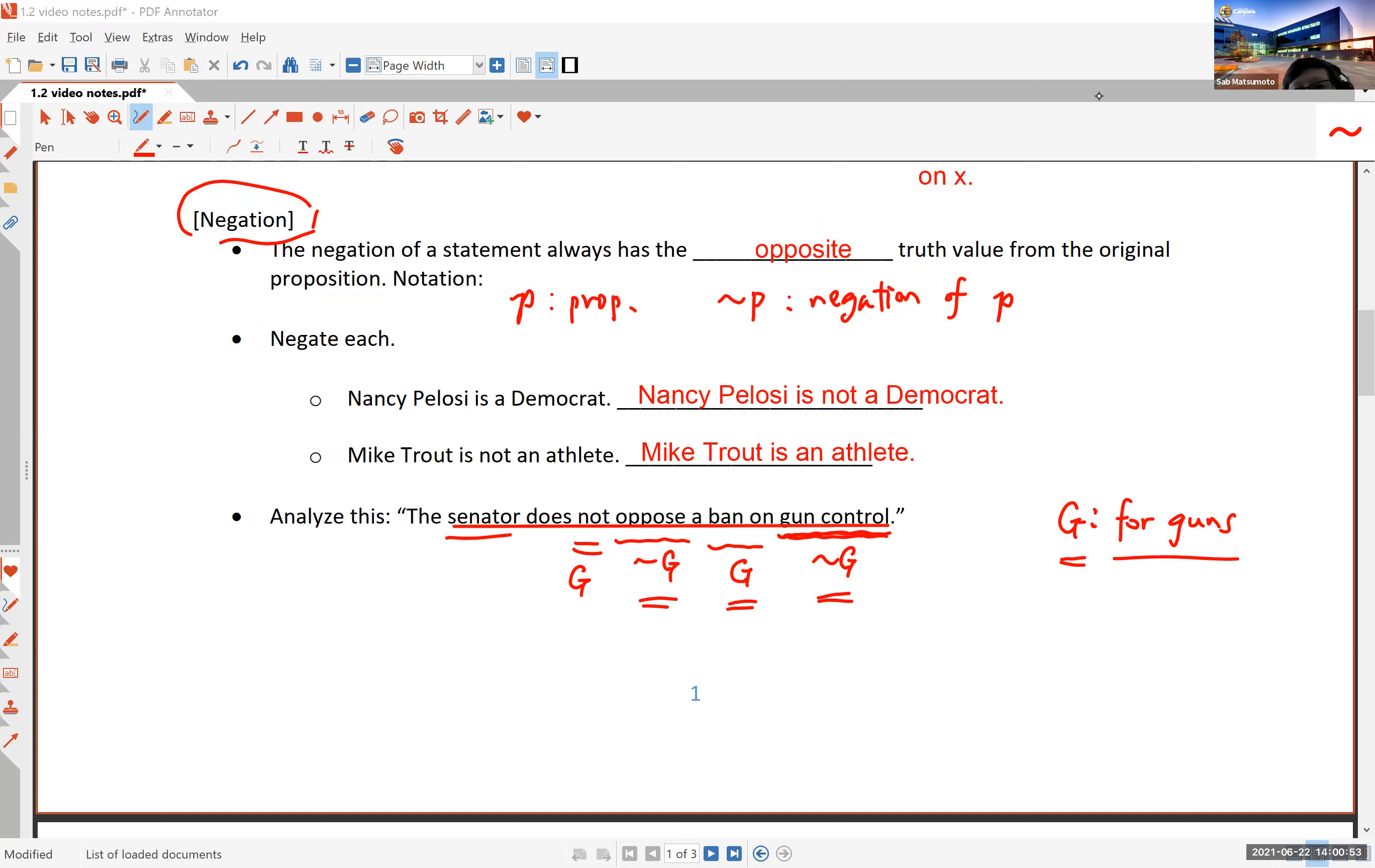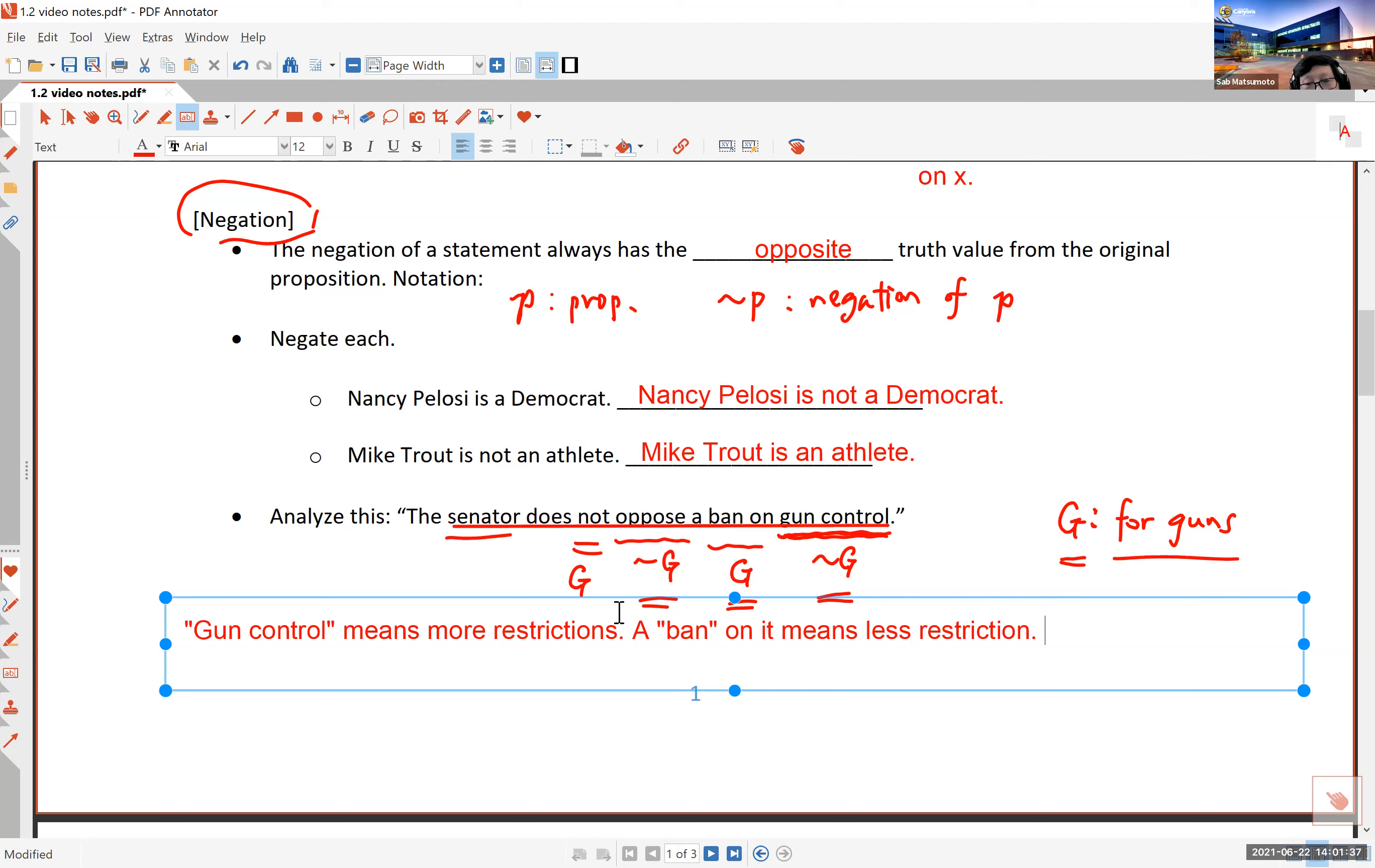I'm going to write this in a more detailed sentence. All right, so gun control means more restrictions. A ban on it means less restrictions. Opposing a ban means more restrictions. This senator does not oppose a ban. So he or she is for less restrictions. Get that?